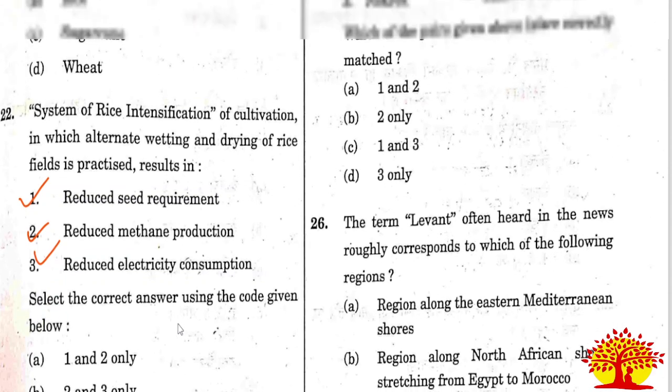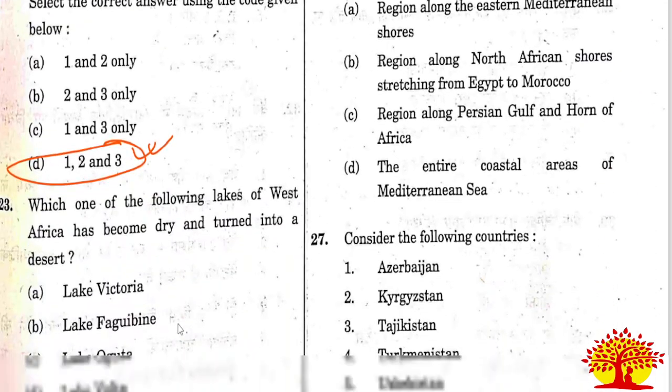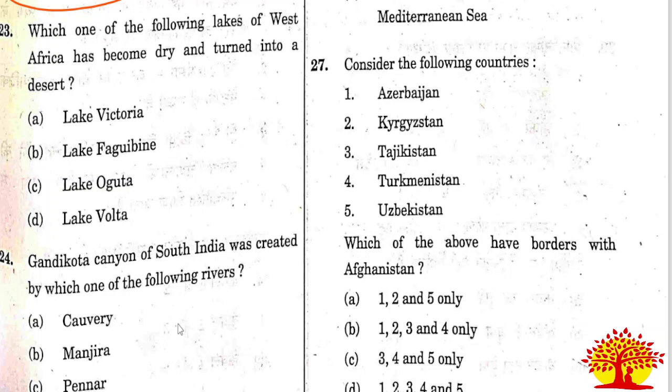Questions 23 to 30 are from geography. Twenty-third question: which one of the following lakes of West Africa has become dry and turned into desert? Option B is the right answer - Lake Faguibine is the correct answer.